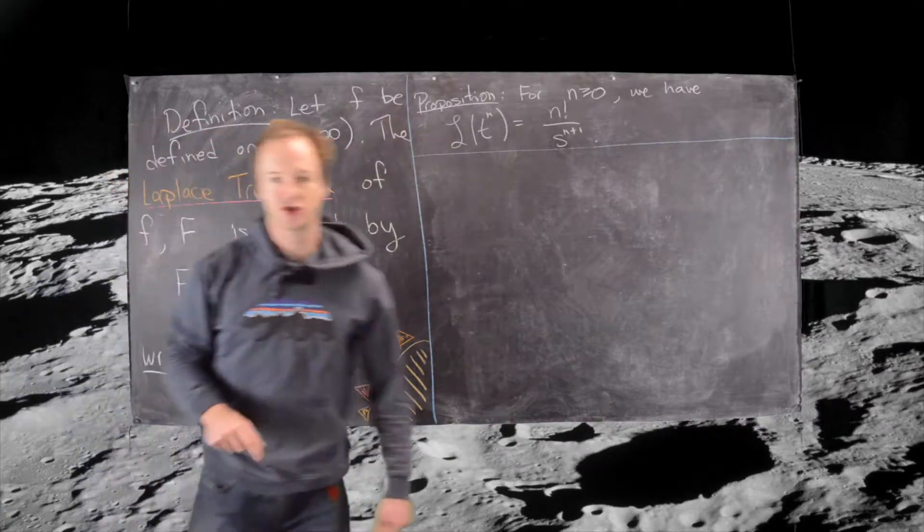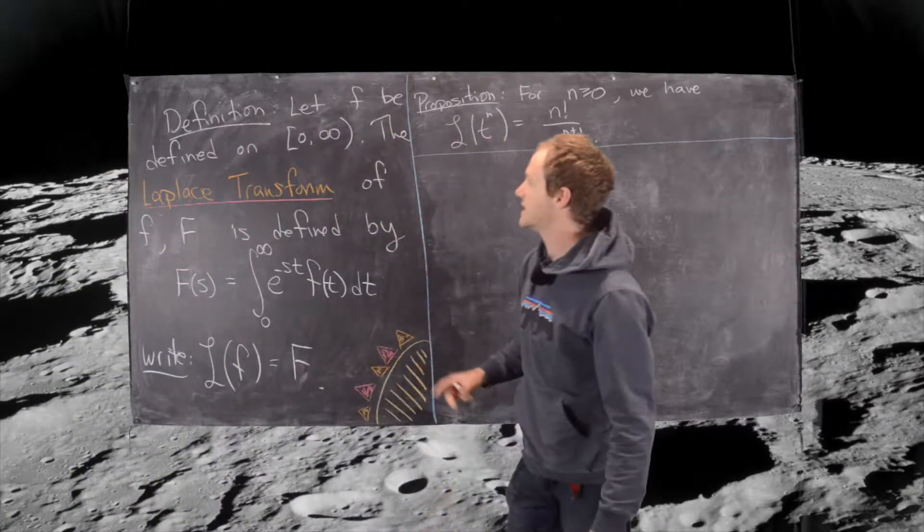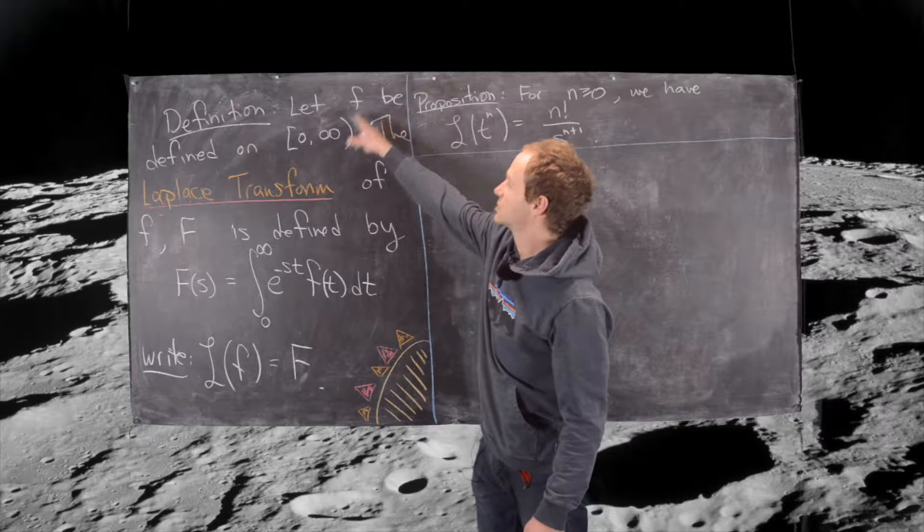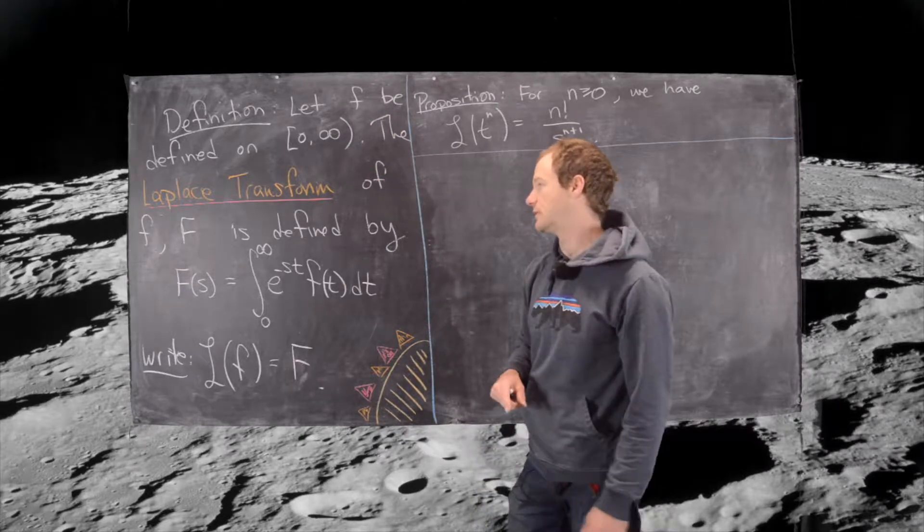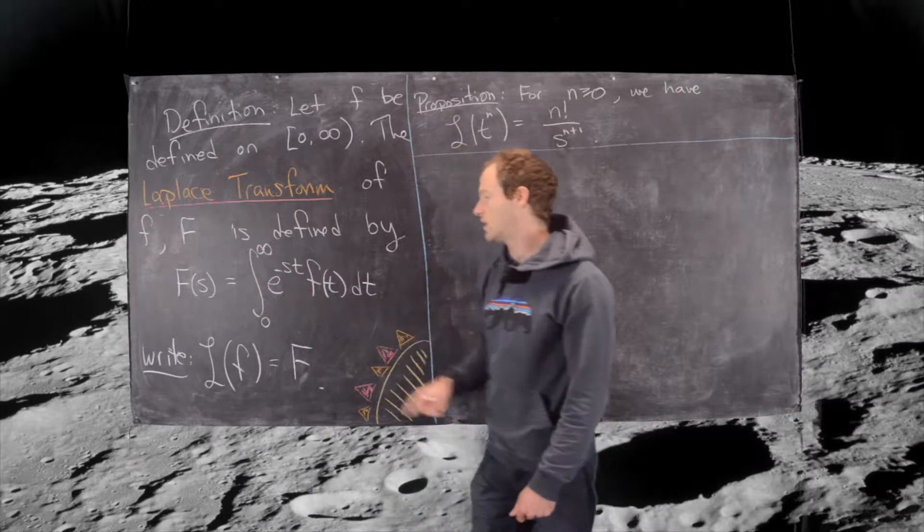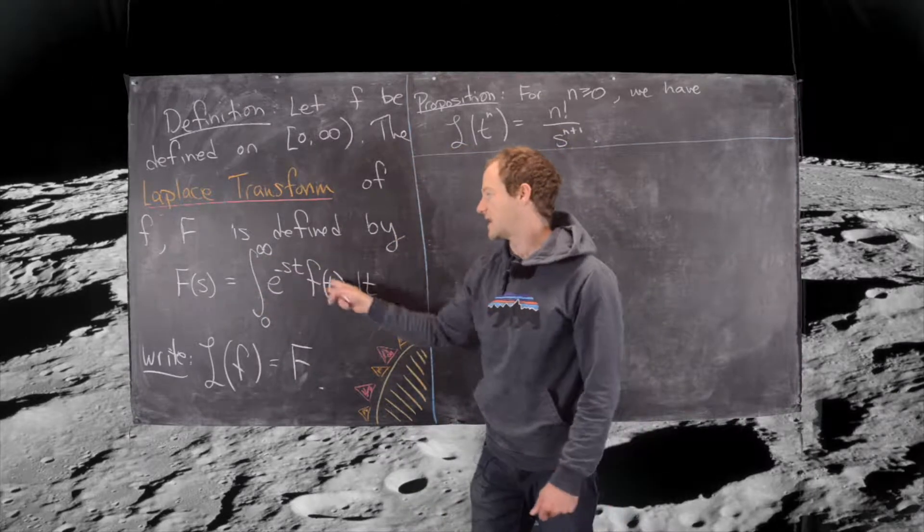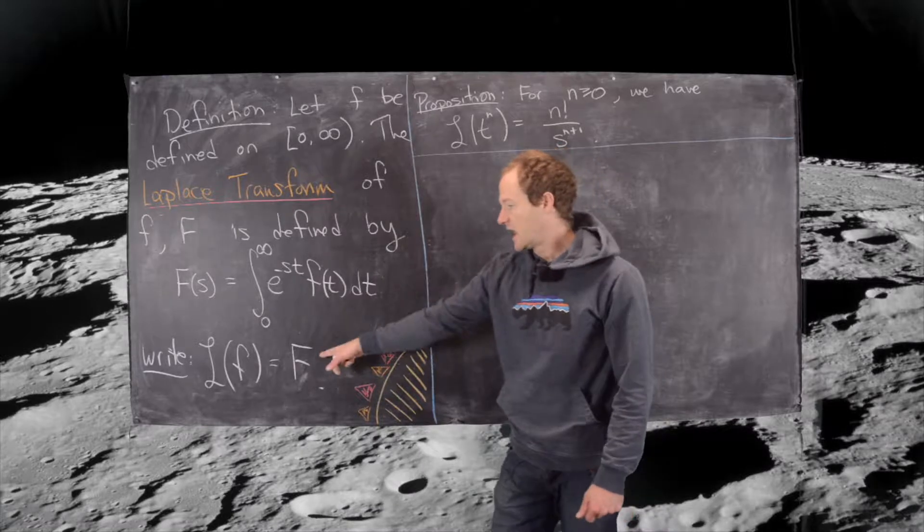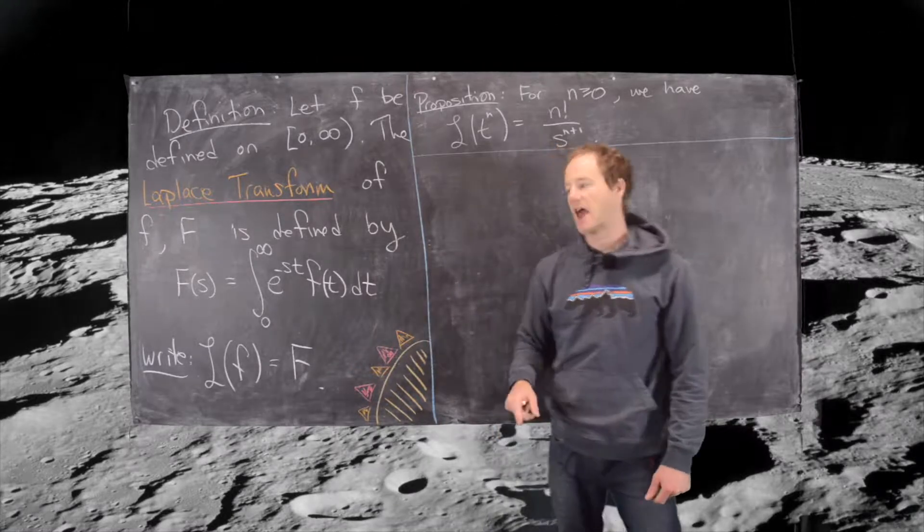Let's just recall a Laplace transformation of a function defined on the interval 0 to infinity is given by the following integral: f of s equals the integral from 0 to infinity of e to the minus st f of t dt, and we generally write this L of f equals capital F.